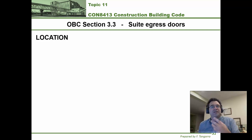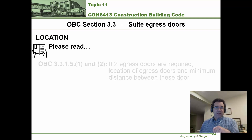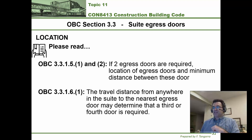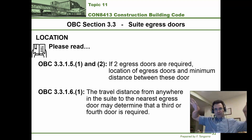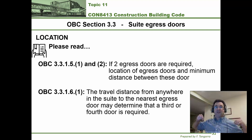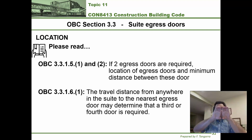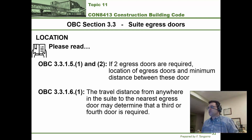Where must suite egress doors be placed? Sentences 1 and 2 under Article 3.3.1.5 say that if two egress doors are required, they must be at a minimum distance from each other. If you need two egress doors, it means either it takes too long for someone at a certain location to reach one door, or there are too many people requiring more than one door. If you put the two doors close together, they essentially end up being just one big door and defeat the purpose — that's why a minimum distance between egress doors is required.